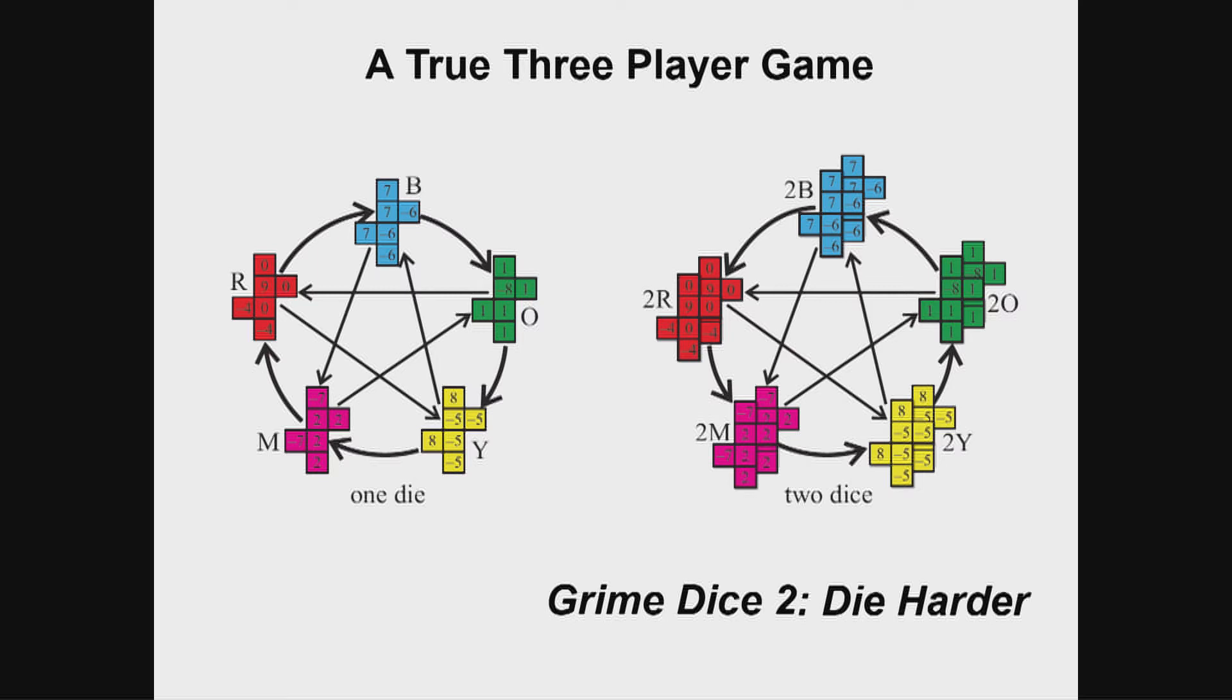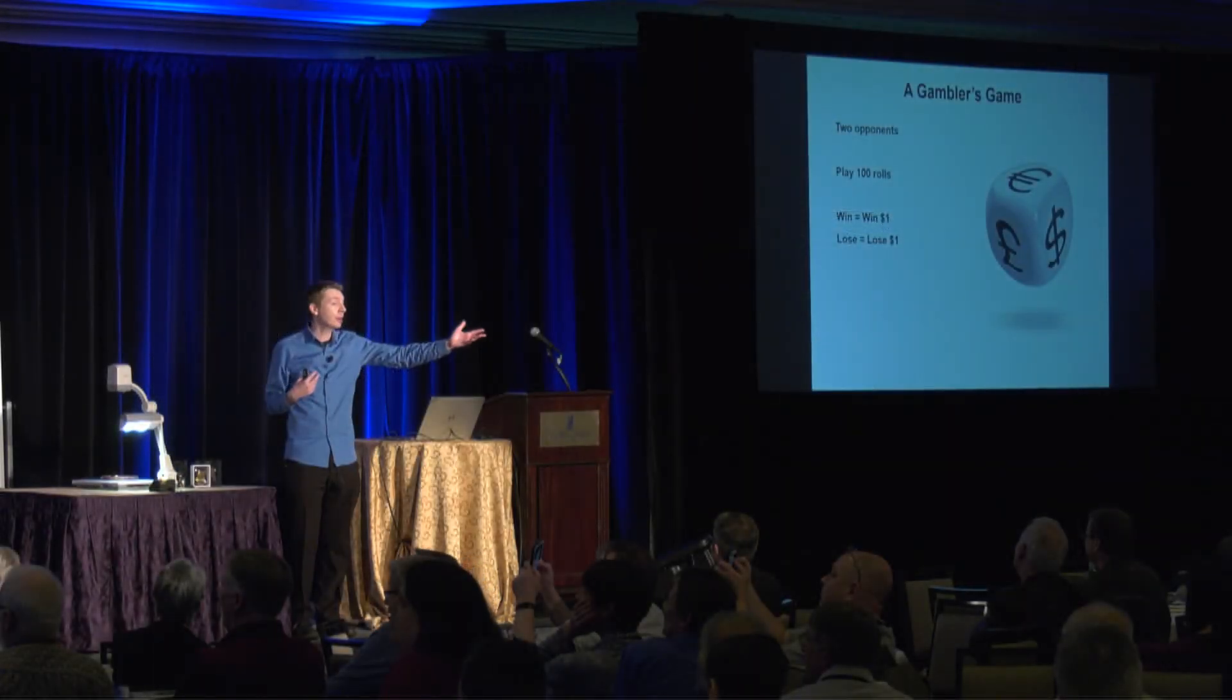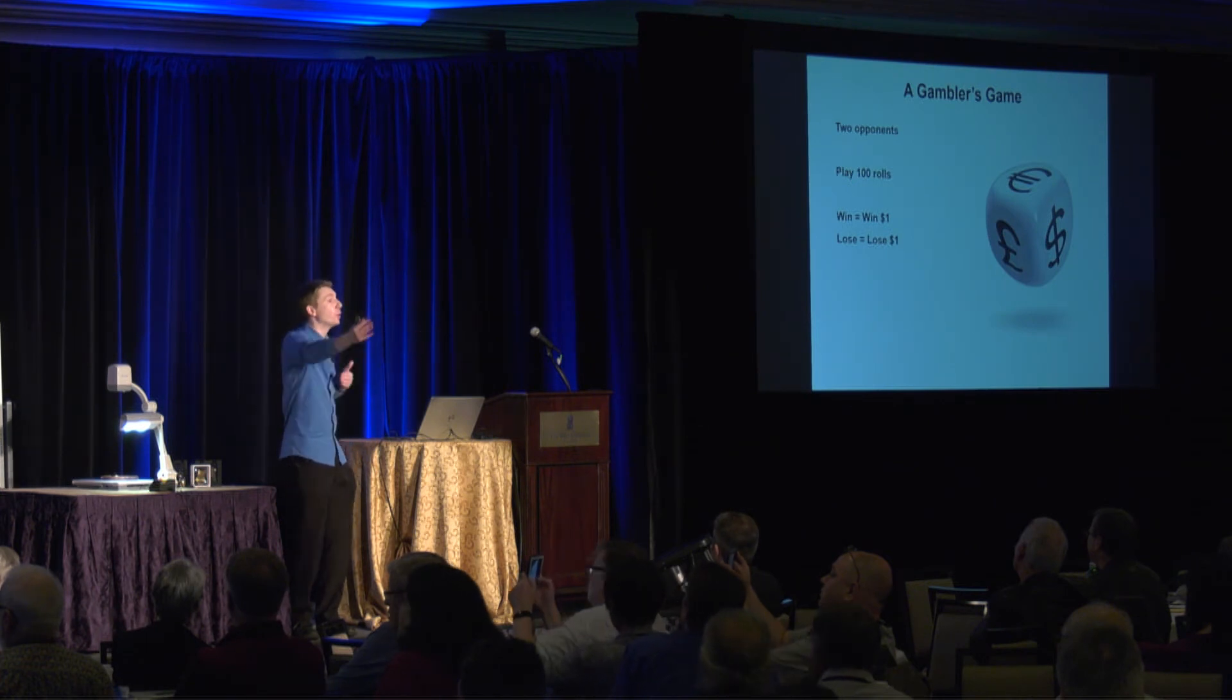So to finish off, let me show you a game you can play using these dice. So it's a gambling game. You're playing two opponents. You're playing a hundred rolls, let's say. Let's say if you win against an opponent, you win a dollar. If you lose, you lose a dollar. So either you're winning two dollars, you're losing two dollars, or you win one, lose one, which is a net loss of zero.